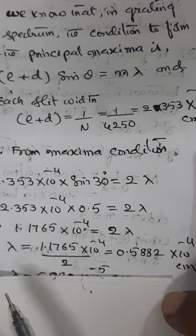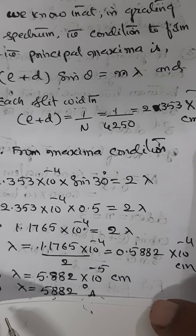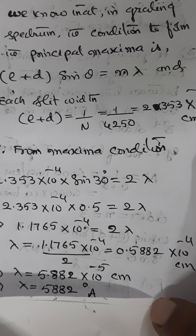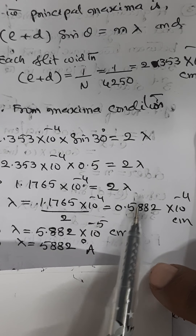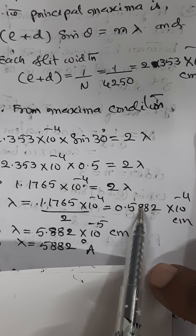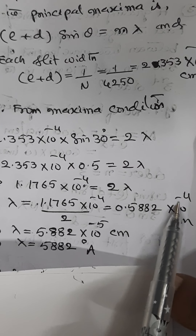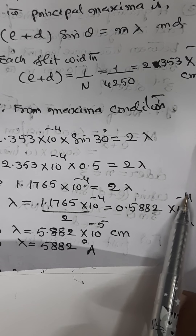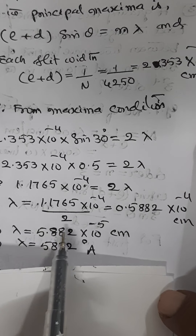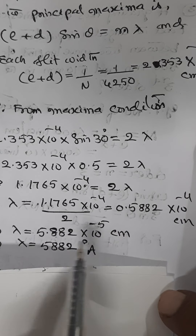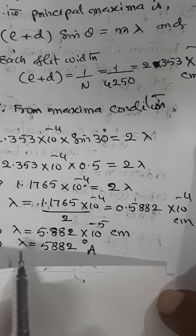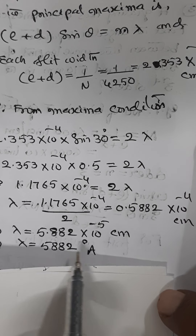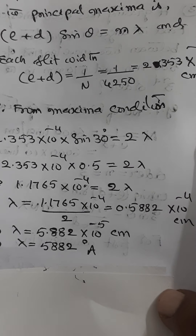Now if you want to convert into angstrom units, this 0.5882 × 10⁻⁴, adjusted to 10⁻⁵, will be 5.882 × 10⁻⁵. So if you want to express it in angstrom units, the wavelength will be 5882 angstrom units. So this is the solution for this problem.